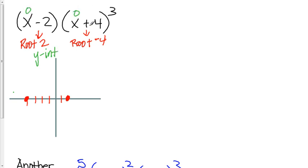It also has a y-intercept. By putting a 0 into both of those two places, you can find the y-intercept. 0 minus 2 is a negative 2. And 0 plus 4 is 4. And 4 to the third is 64. Times a negative 2 equals a negative 128. So we know way down at a negative 128 it crosses.